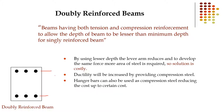Ductility will be increased by providing compression steel, as steel has the property of ductility. Hanger bars can also be used as compression steel, reducing cost to a certain extent. In singly reinforced beams we use top bars only as hanger bars for hanging ties or stirrups, but in the doubly reinforced beam the top bars are used in the analysis. We use the magnitude of this area of steel in the analysis and design, which also helps reduce cost.